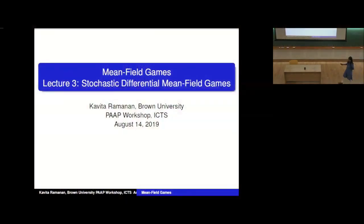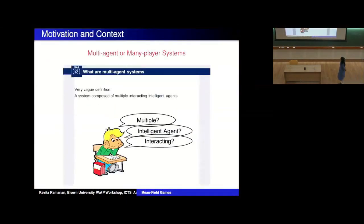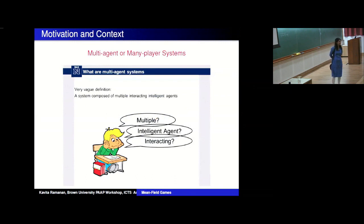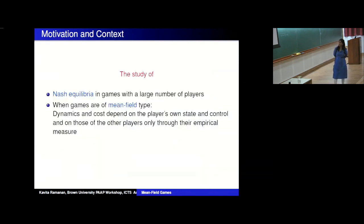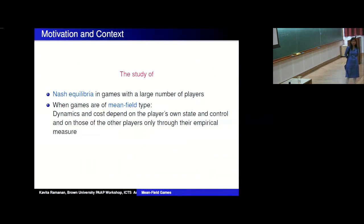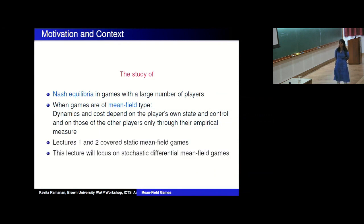This is the third lecture. We have been talking about multi-agent many-player systems and studying Nash equilibria in games with a large number of players when the games are of mean field type — meaning the dynamics and cost depend on the player's own state and control, and on those of the other players only through their empirical measures. Lectures one and two covered static mean field games. This lecture will focus on stochastic differential mean field games.